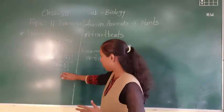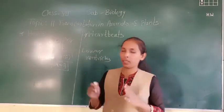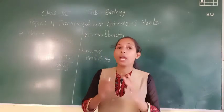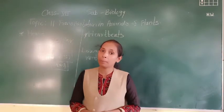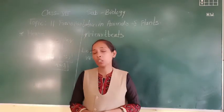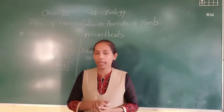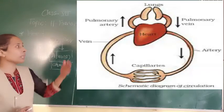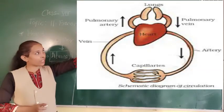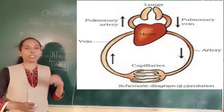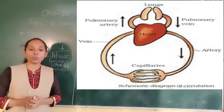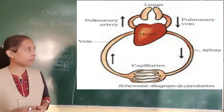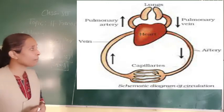Because of the two atria and two ventricles, the partition of the heart avoids the mixing of carbon dioxide-rich blood and oxygen-rich blood. Now, from the image, we will discuss how exactly the circulation of blood takes place in different parts of the body.